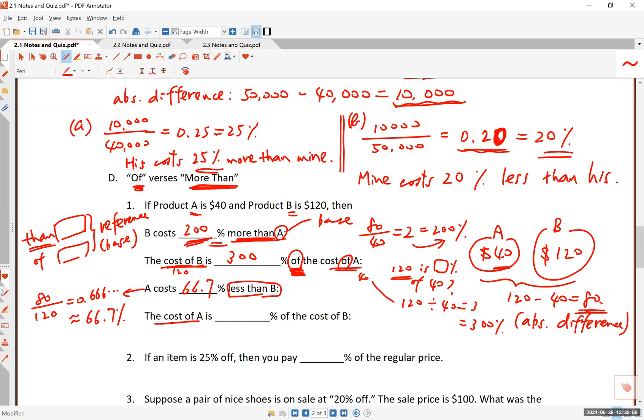But the cost of A, which is $40, is what percent of the cost of B, which is 120? For this problem, you have to divide 40 by 120, and this time it's 0.333, which is 33.3%, approximately, rounding off with one decimal place.